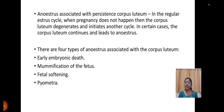Anestrus associated with persistent corpus luteum: in the regular estrus cycle, when pregnancy does not occur, the corpus luteum degenerates and another cycle initiates. In certain cases, the corpus luteum continues and leads to anestrus. There are four types of anestrus associated with corpus luteum: early embryonic death, mummification of the fetus, fetal maceration, and pyometra.